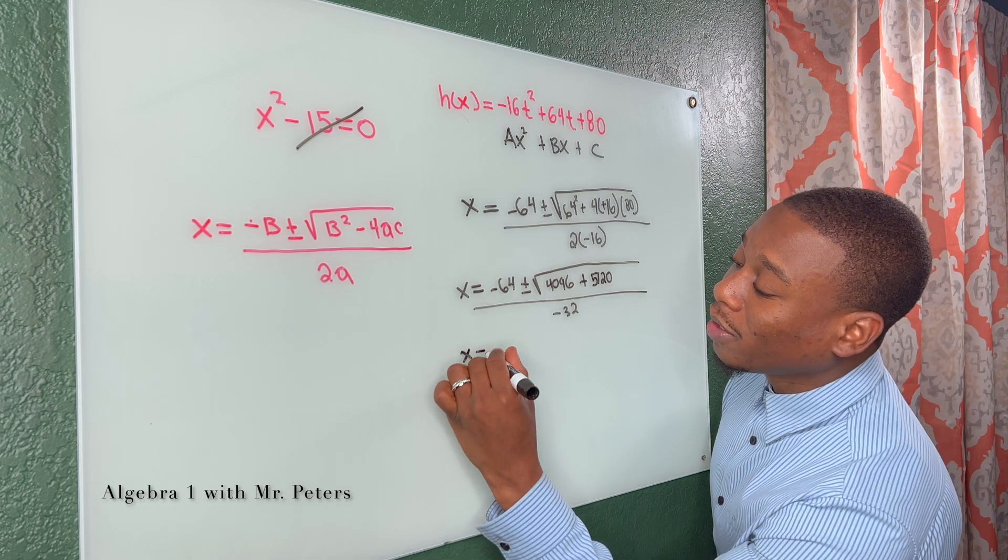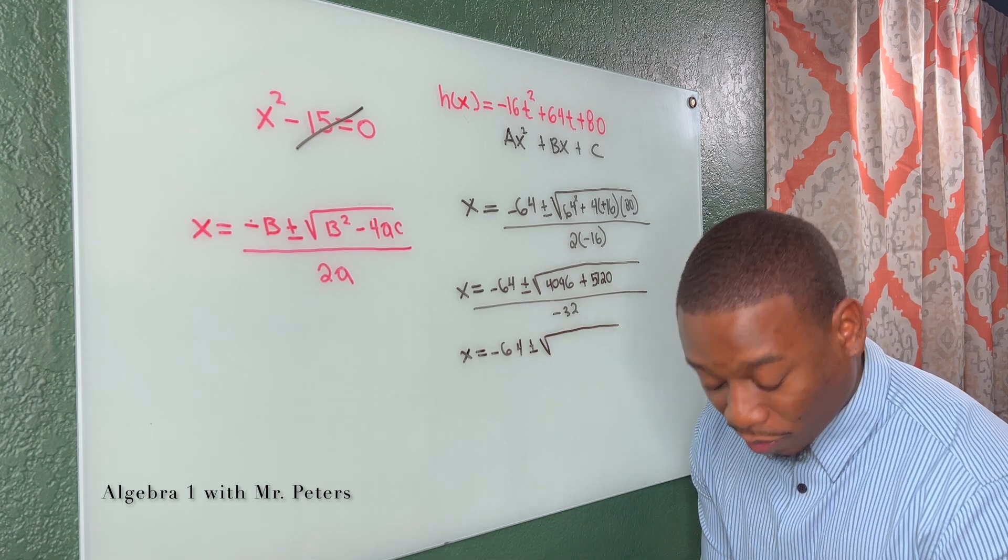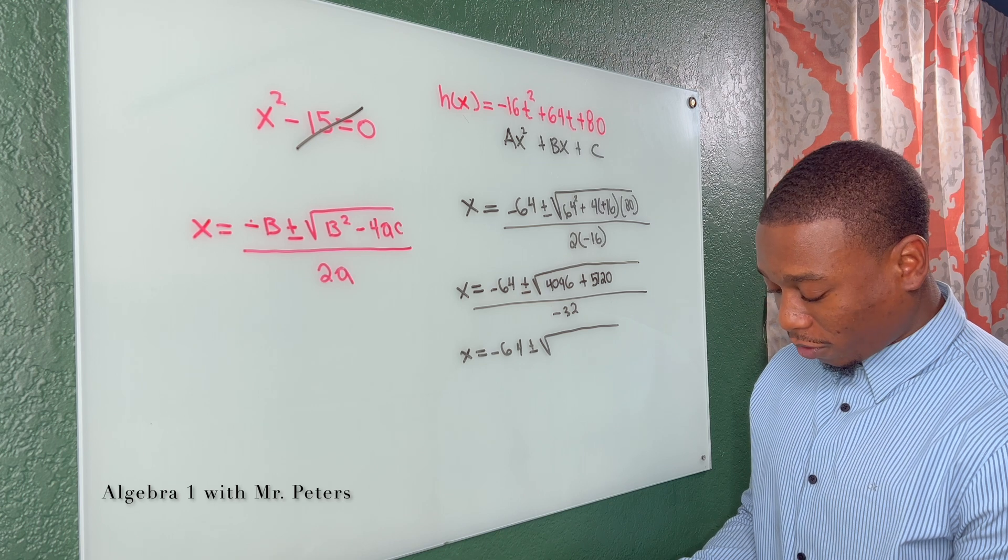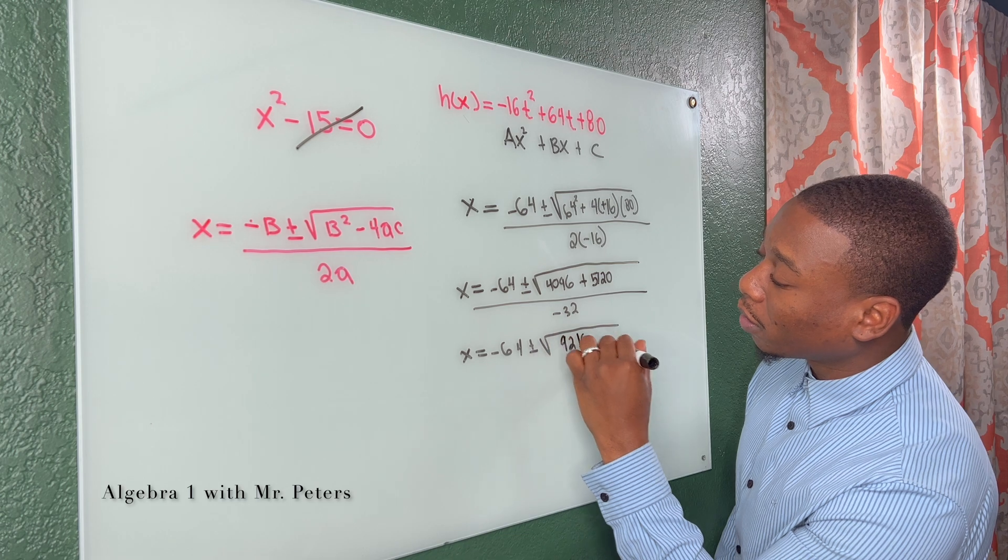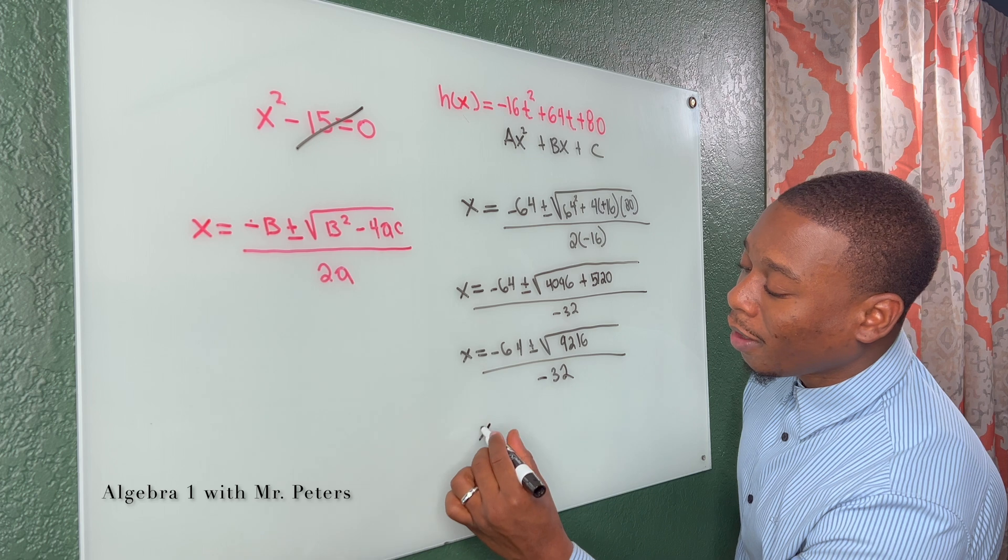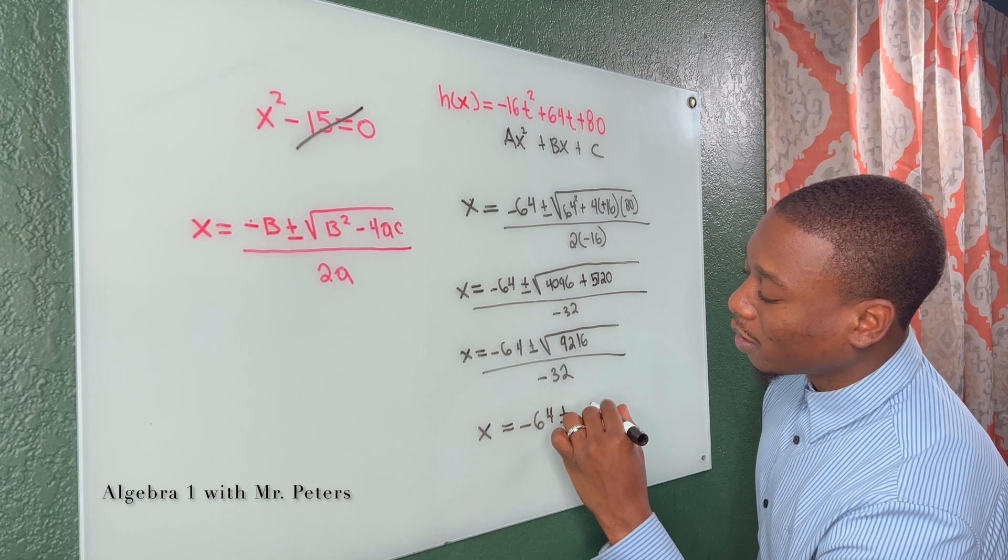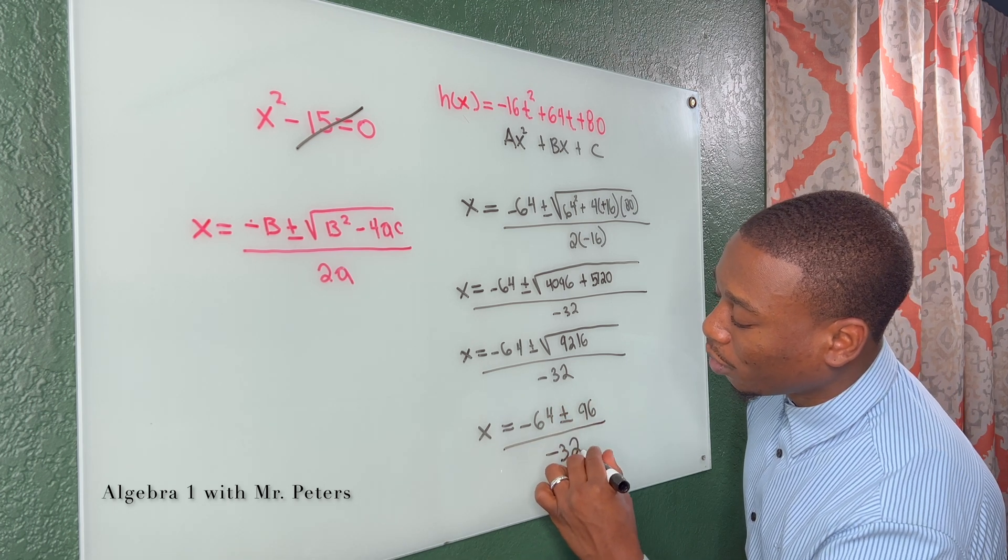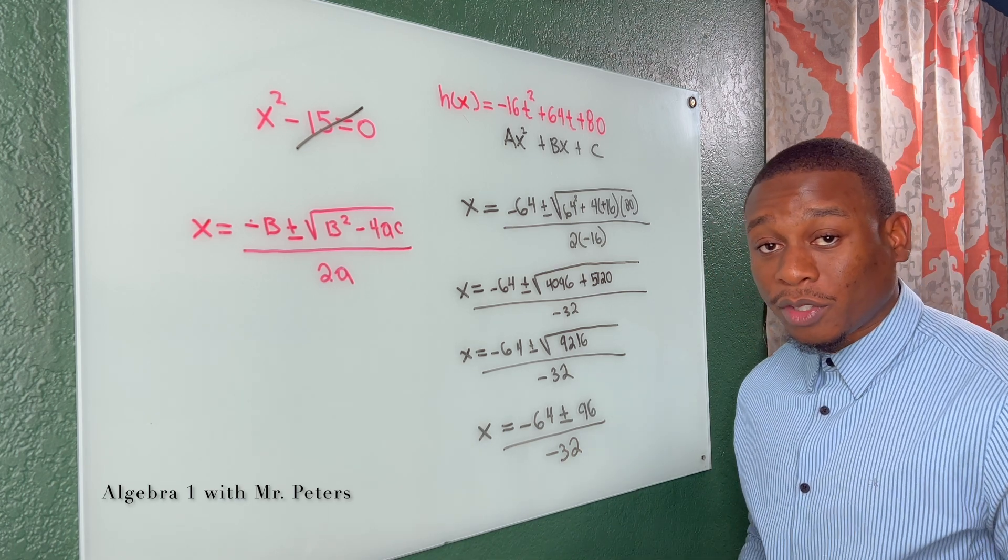So we have x is equal to negative 64 plus or minus. I'm going to be real with you guys. I'm going to just add this in the calculator. So we're going to get 9,216 all over negative 32. Now, once we simplify this, x is equal to negative 64 plus or minus 96 over negative 32. Why is this important? And what does the plus or minus mean? Guys, we're going to have two answers.